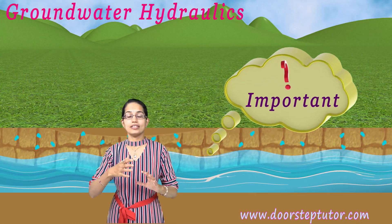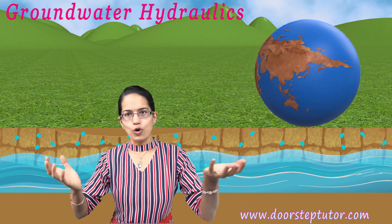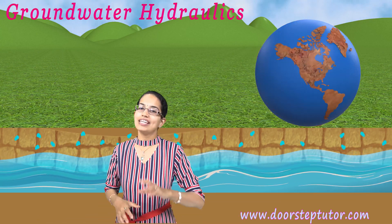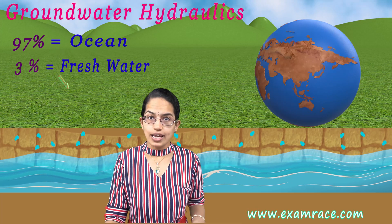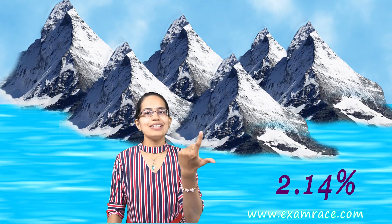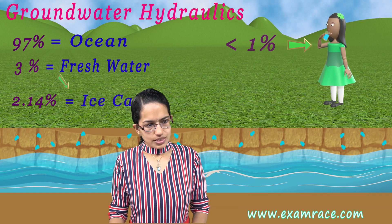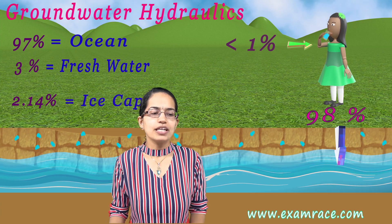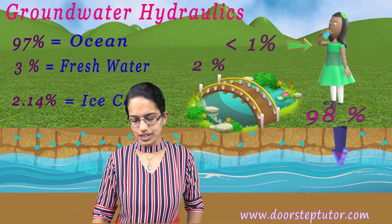Now why is groundwater so important? If we look at this globe, nearly 97% of the water component besides the land is in the oceans, and this 97% is not usable for drinking. What we are left with is just 3% fresh water. But out of this 3%, nearly 2.14% is trapped in ice caps in polar areas. So what remains for human consumption is less than 1%, of which nearly 98% is present in groundwater and merely 2% in lakes and rivers. Therefore groundwater hydraulics is a very important aspect to understand.